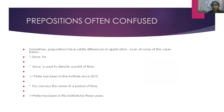Now let's look into the prepositions that are often confused. Sometimes prepositions have subtle differences in application. Since and for: since is used to denote a point of time. For example: Peter has been in this institute since 2010. For conveys the sense of a period of time. For example: Peter has been in this institute for three years.